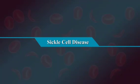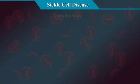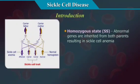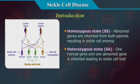Sickle Cell Disease — Introduction. Sickle Cell Disease is an inherited condition characterized by the presence of an abnormal hemoglobin variant, hemoglobin S, called HBS. When HBS exists in a homozygous state, it results in sickle cell anemia, and in a heterozygous state, it results in sickle cell trait.